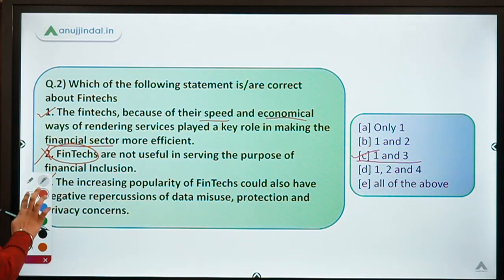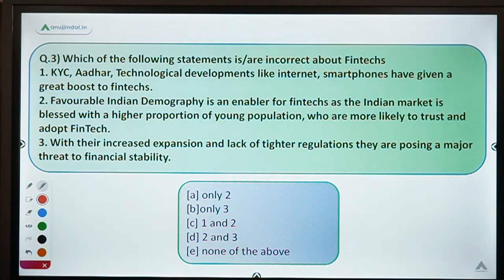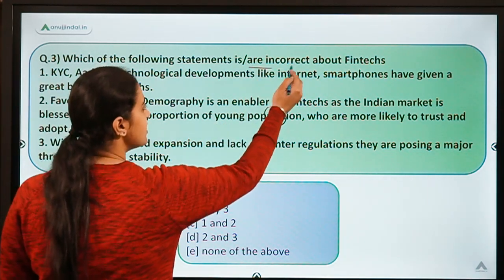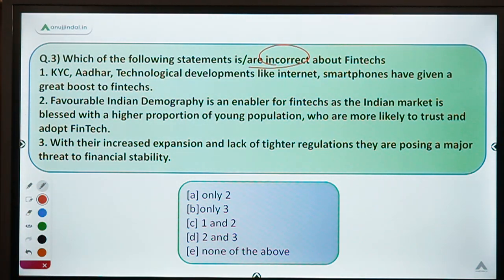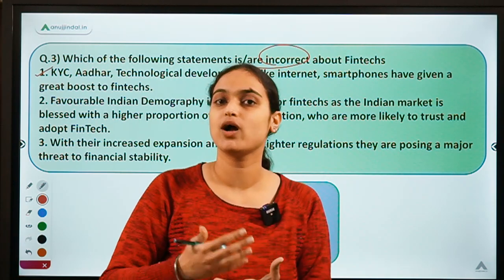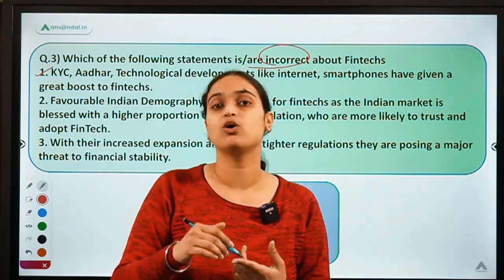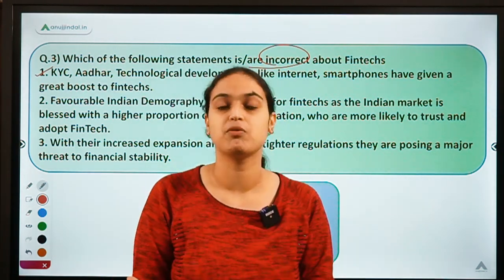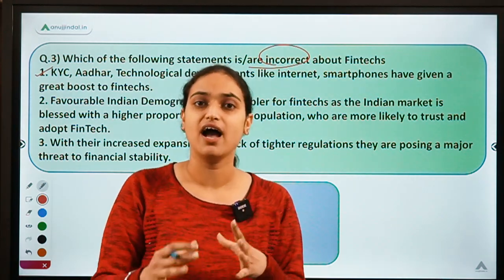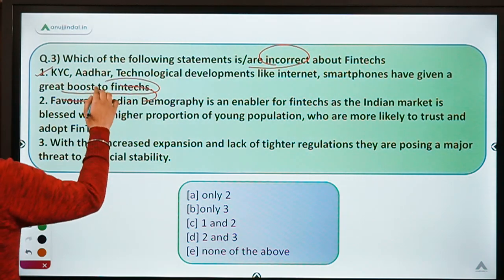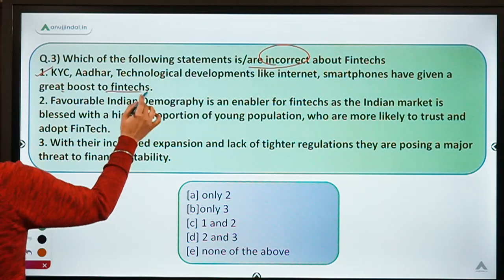Now let's move on to question number 3, which says: which of the following statements is or are incorrect about fintechs? Please read carefully whether it asks for correct or incorrect statements — here we identify the incorrect ones. The first statement says KYC, Aadhaar, and technological developments like internet and smartphones have given a great boost to fintechs. This statement is absolutely correct — without internet you can't make payments online, and without smartphones you can't use internet. KYC and Aadhaar also handle privacy and ensure transparency.